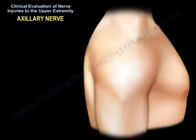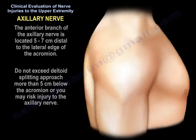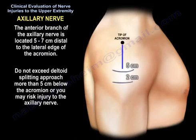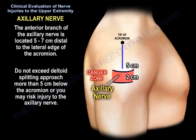The anterior branch of the axillary nerve is located 5 to 7 cm distal to the lateral edge of the acromion. Do not exceed a deltoid splitting approach more than 5 cm below the acromion, or you may risk injury to the axillary nerve.